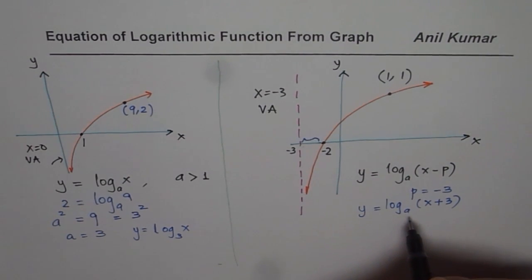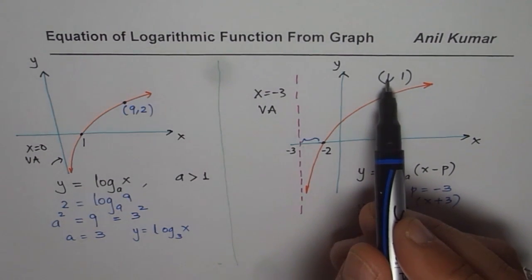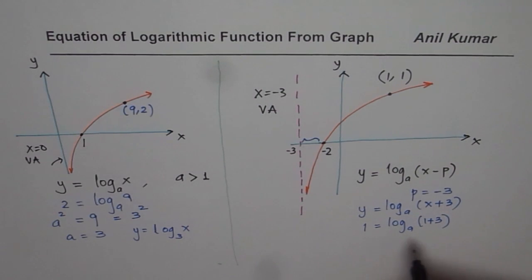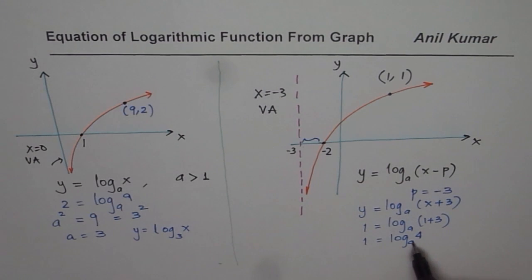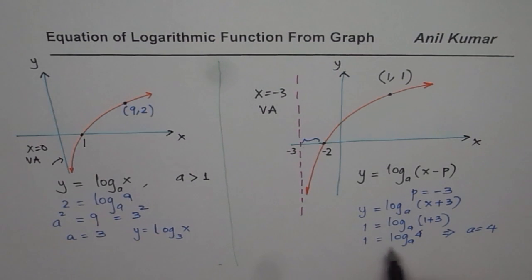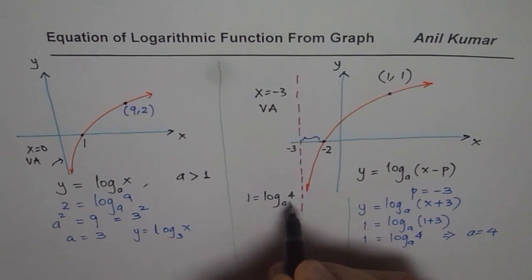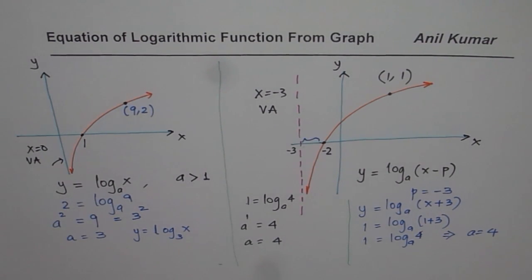To find the value of a, we use the given point (1, 1). Substituting: 1 equals log to the base a of (1 plus 3), which gives 1 equals log to the base a of 4. Therefore a must equal 4. Alternatively, converting to exponential form: a to the power of 1 equals 4, so a equals 4. Both methods give the same answer.